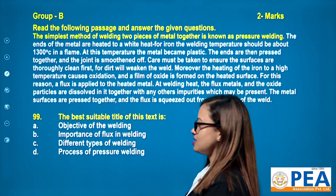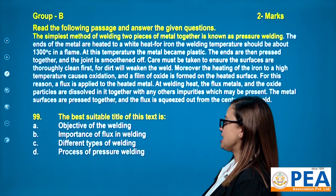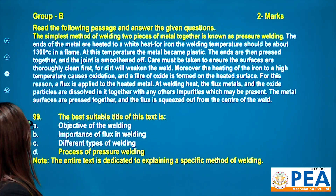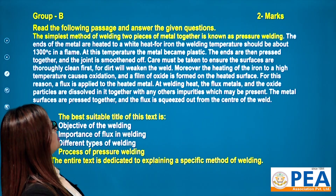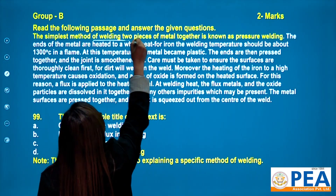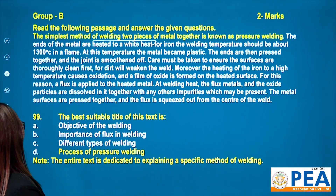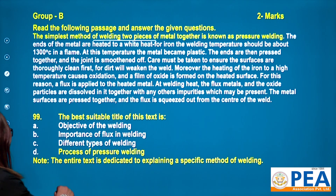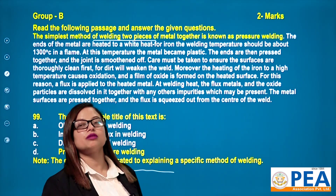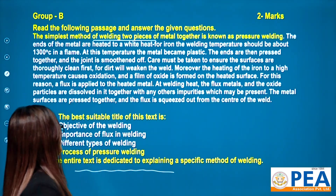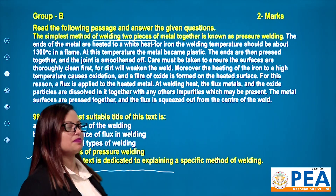Question 99: The best suitable title of this text is — objective of welding, importance of flux in welding, different types of welding, or process of pressure welding. The passage begins with 'The simplest method of welding two pieces of metal together is known as pressure welding.' The entire text is dedicated to explaining this specific method. The correct answer is option D — process of pressure welding.